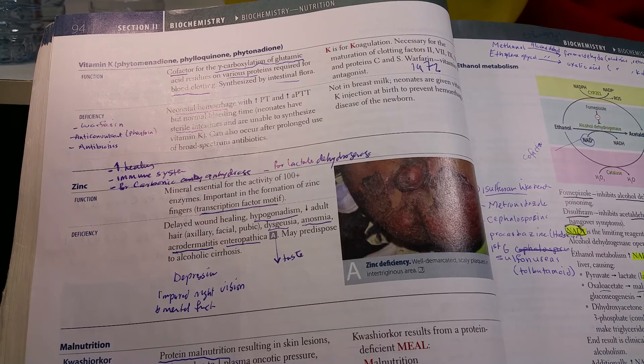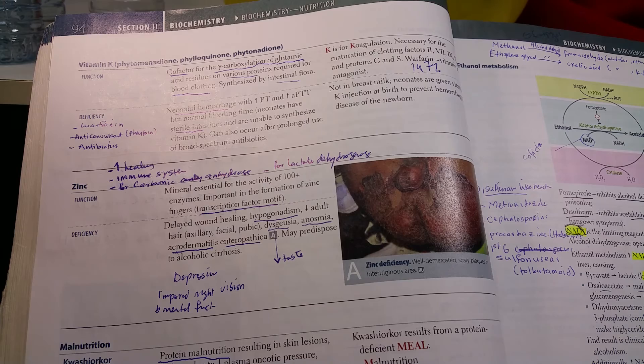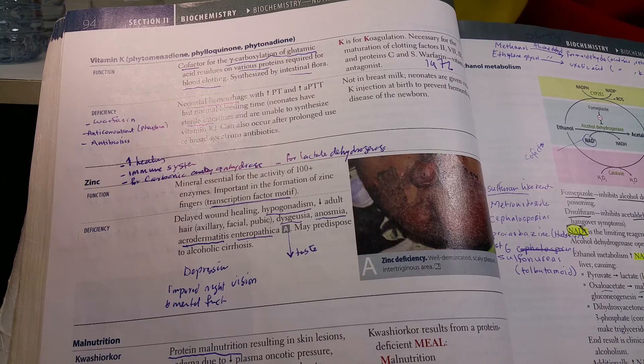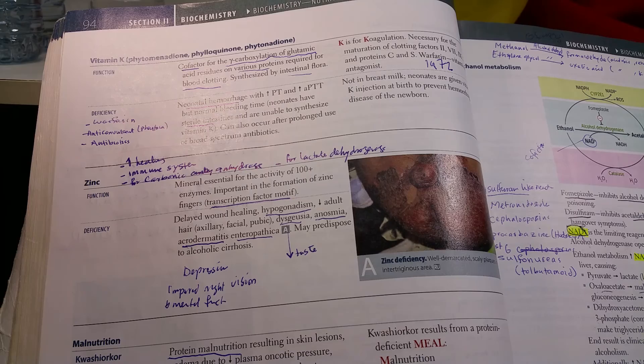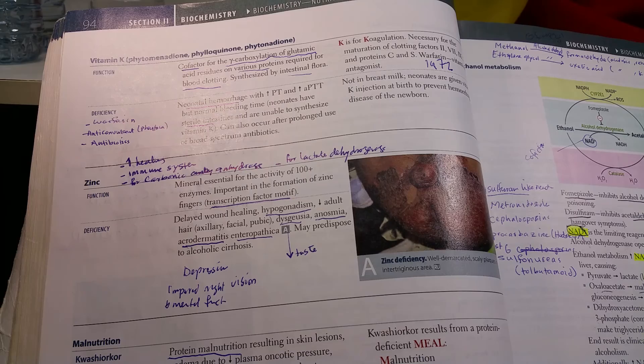For zinc, what we need to know is that it helps in healing and helps the immune system. The deficiency delays wound healing and causes hypogonadism. I don't think it's very high yield.